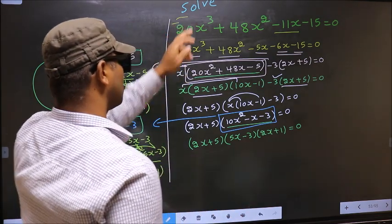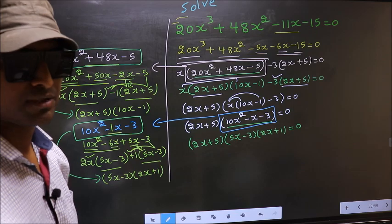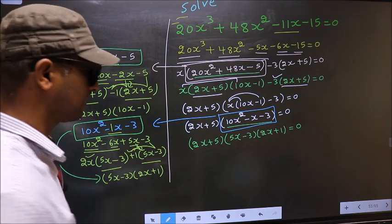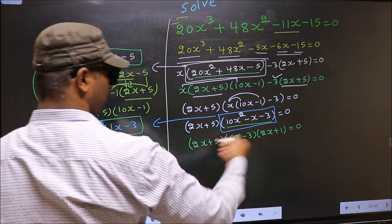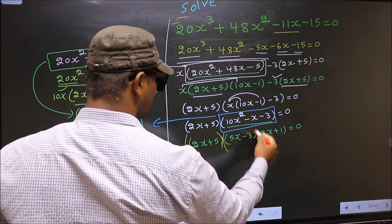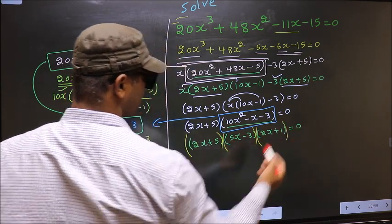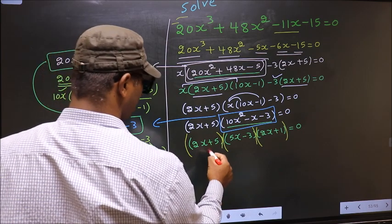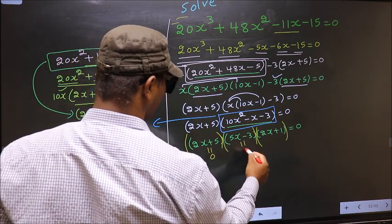They told us to solve, which means we should get the values of x. Over here we have a product of brackets equal to 0. So to get the x values, we should equate each bracket to 0.